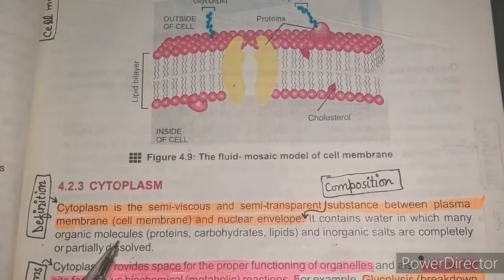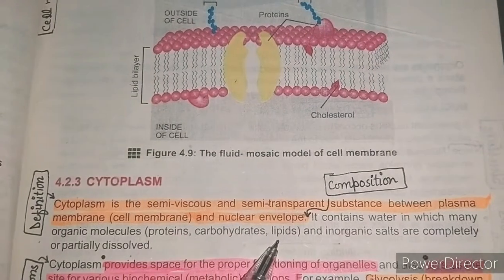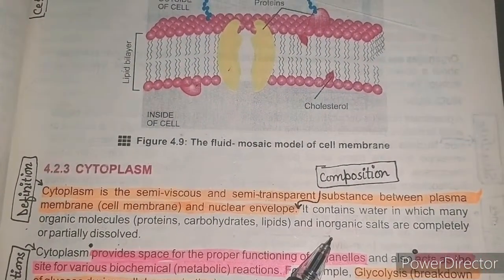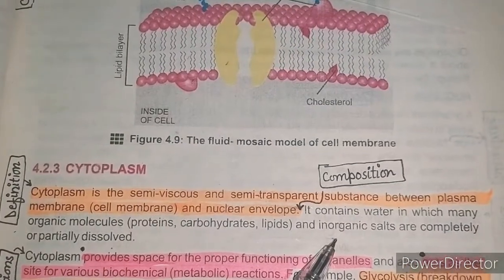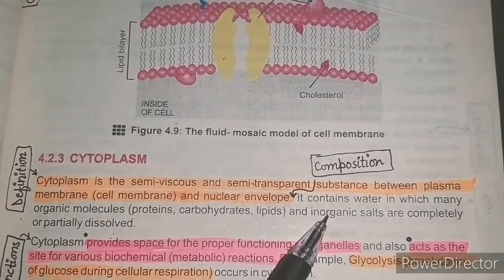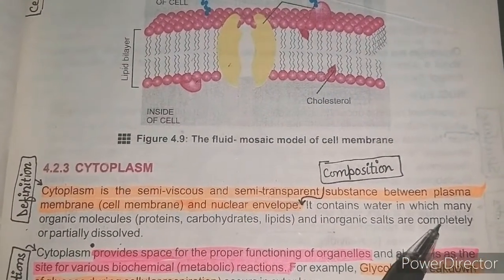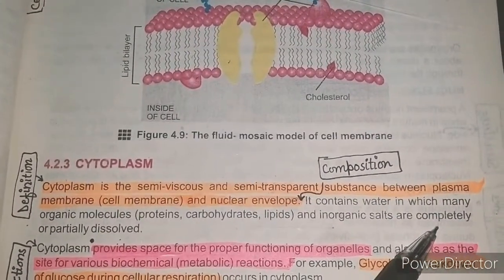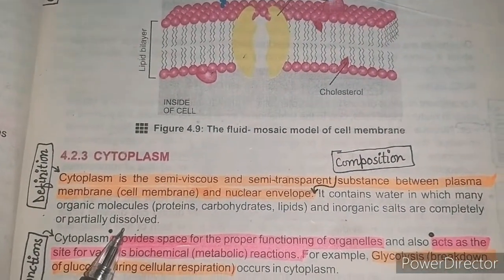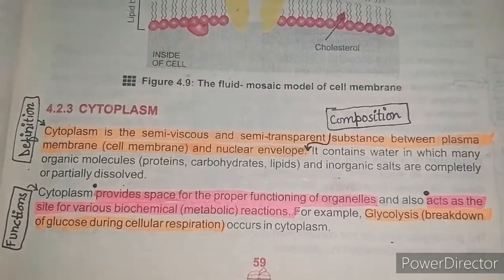Organic molecules include proteins, carbohydrates, and lipids — which we intake as food and which finally reach the cell. Inorganic salts, which we also intake, along with some ions, are either completely or partially dissolved in the cytoplasm.